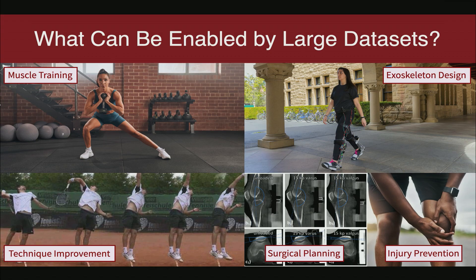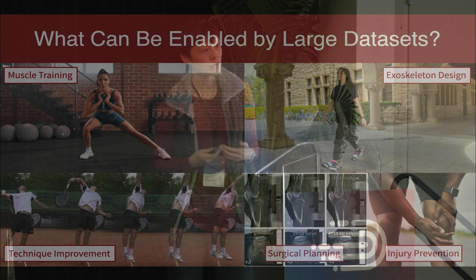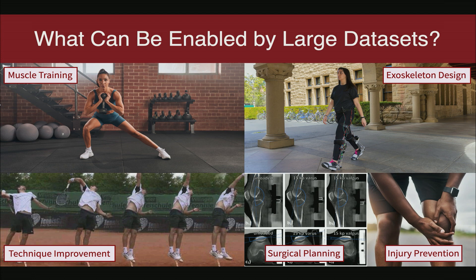Imagine if we had the same order of magnitude of data for human motion — what kind of amazing digital twins could we build at ChatGPT-level intelligence? We could probably predict anything from the outcome of muscle training, to sport technique improvements, to injury prevention. We could use digital twins to build better exoskeletons or more effective surgical planning, and make those twins generalize to different situations and personalize to individuals — only if we have the data.